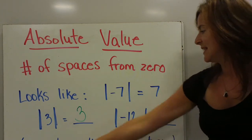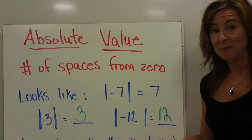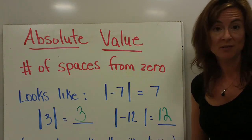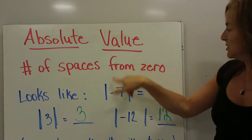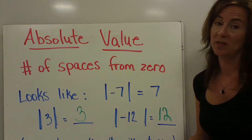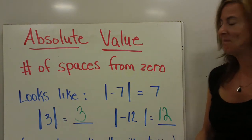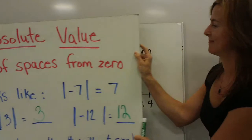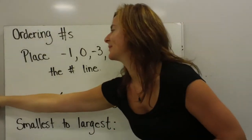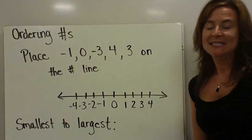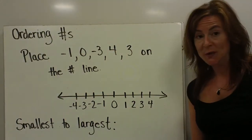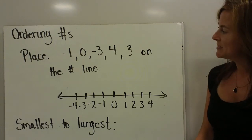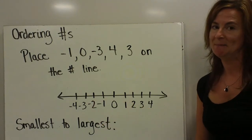Notice that when we're talking about absolute value, it's always just whatever number is in between those vertical lines without a sign. To introduce — or for many of you to review — ordering numbers, we're going to go back to our number line.